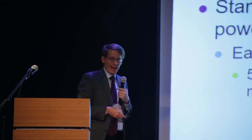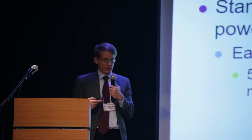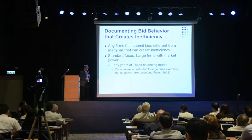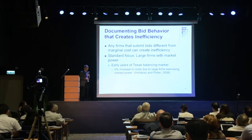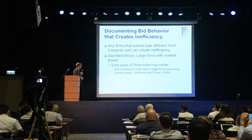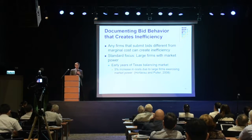So why does it matter if large firms are exercising market power like the large firm I just showed you? In general, any firm that submits bids different from its variable cost is going to contribute to higher dispatch costs. In an earlier study with a research colleague, we studied the early years of the Texas balancing market and found that when large firms behaved this way — exercising market power, bidding higher than marginal costs for quantities greater than their contract position — that increased dispatch costs by about 5% in the early years of the market.